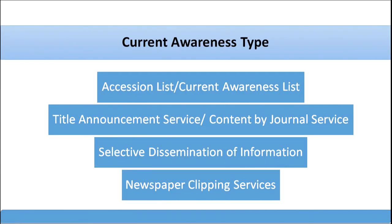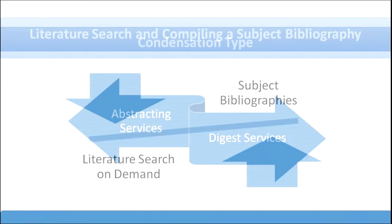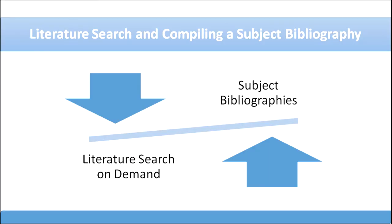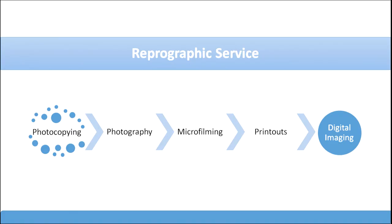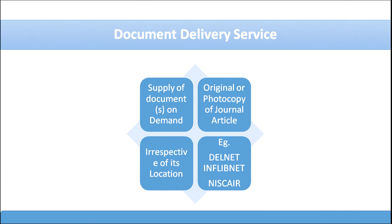Current awareness systems provide lists, contents of journals, selective dissemination, and newspaper clippings. Condensation service provides abstracting and digest services. Literature search and subject bibliography compilation provides subject bibliographies on a particular subject and literature searches on demand. Reprographic services include photocopying, photography, microfilming, printout, and digital imaging — basic library work being photocopying documents for users. Document delivery services are provided by Delnet, Inflibnet, and NISCAIR, which supply documents — original or photocopy of journal articles — on demand irrespective of location.